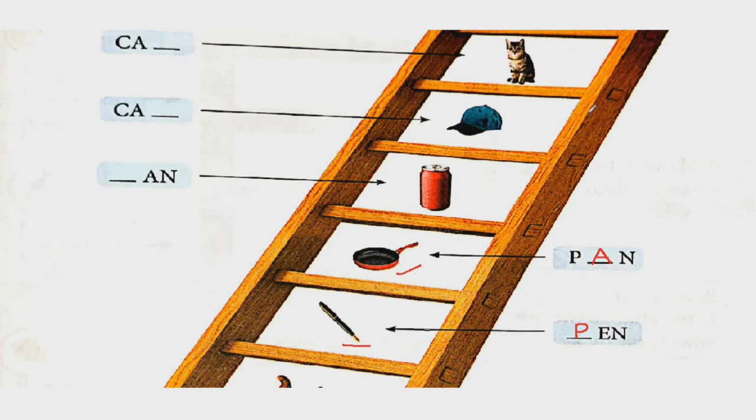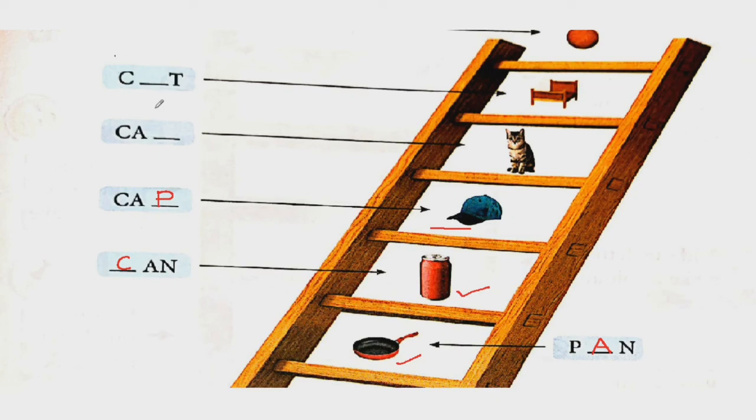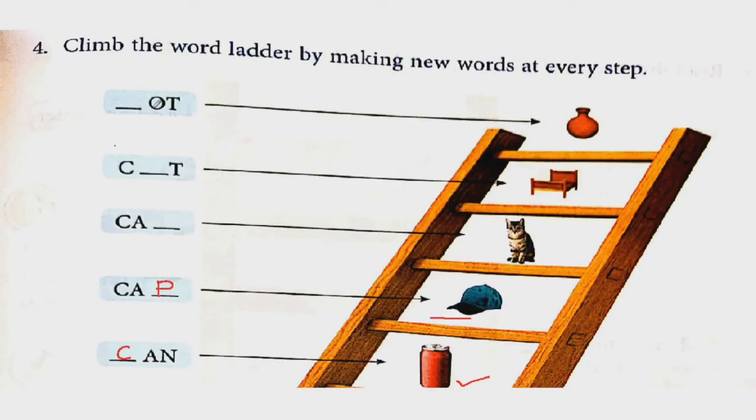Now look at this picture. This is the picture of can. So C-A-N, can. C is consonant. Now this picture is of cap. C-A-P, cap. P is again consonant. This is cat. C-A-T, cat. T is consonant. Look at this. This is the cot. So C-O-T, cot. O is vowel. And this picture is of pot. So you will write P-O-T, pot. So P is consonant.